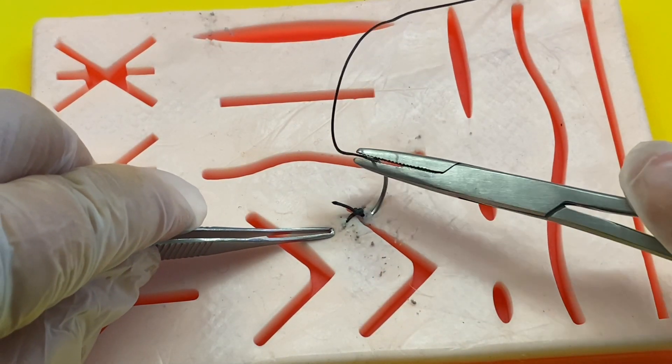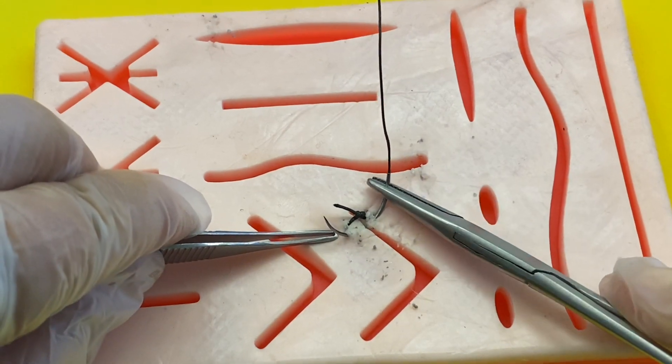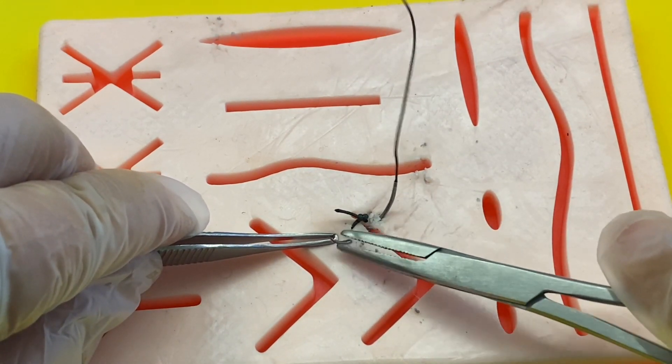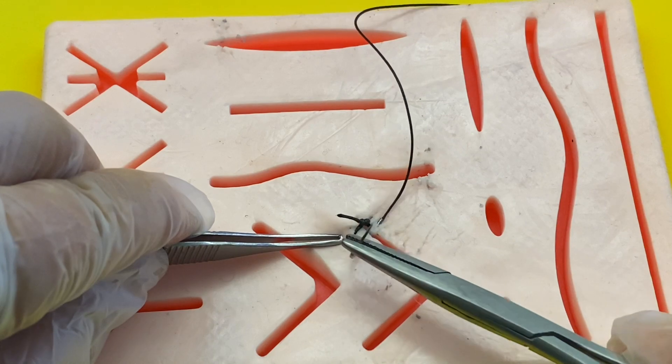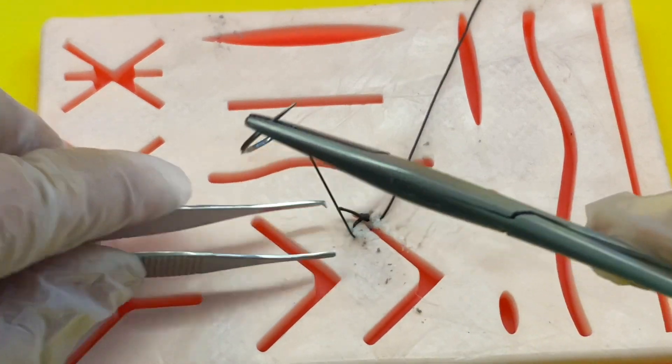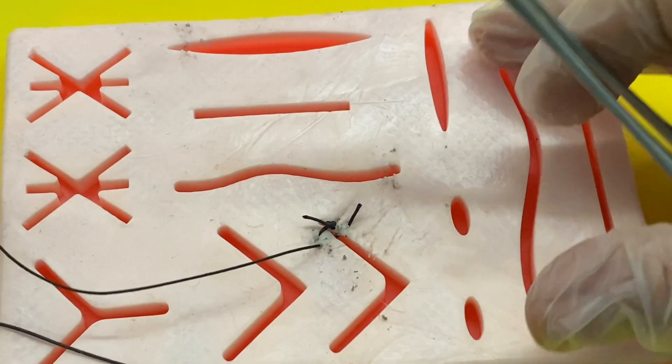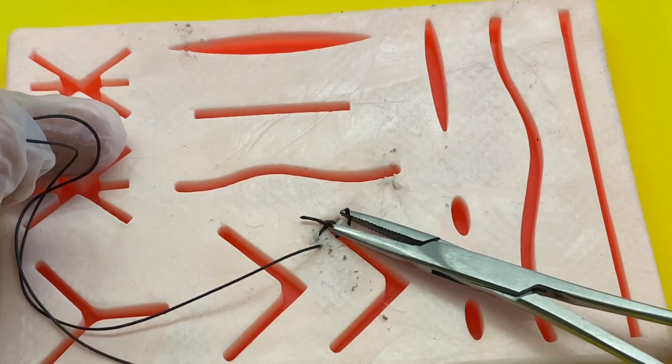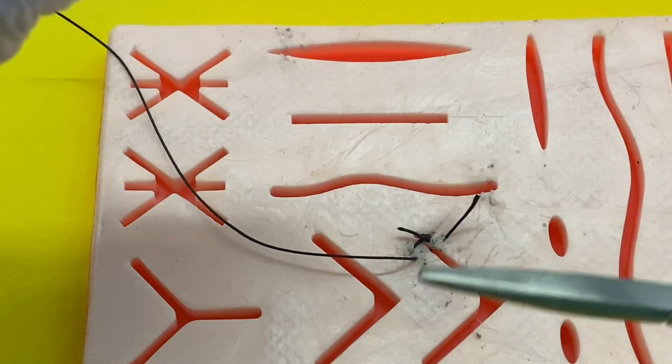Get the needle driver and follow the same steps. Use the tweezers to help you hold the skin down. Use your needle holder to pull the thread and needle through. And make sure you leave a little bit at the end. I had to pull mine back a little bit.